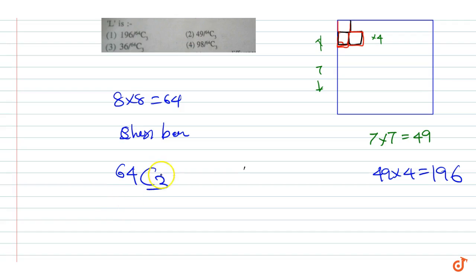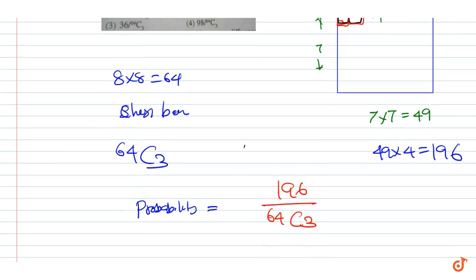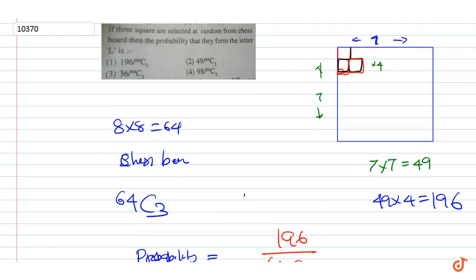probability equals 196 upon 64C3. Therefore, the correct answer is one.